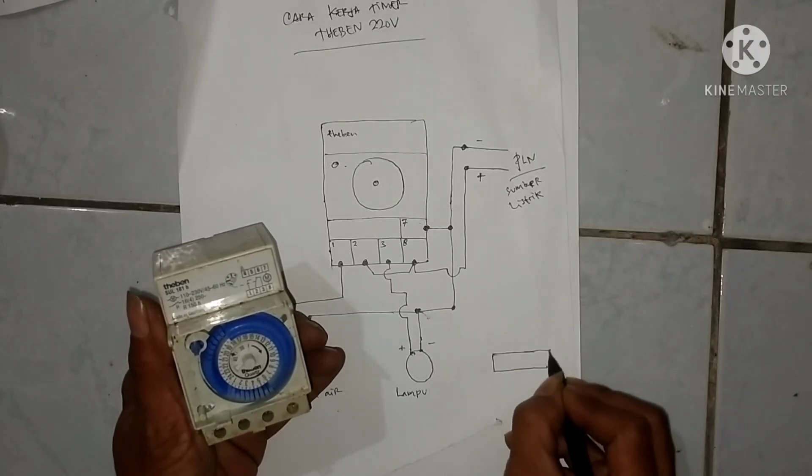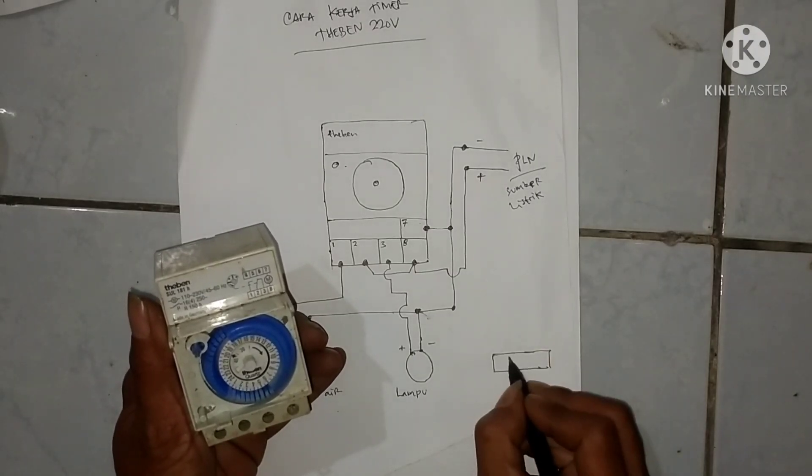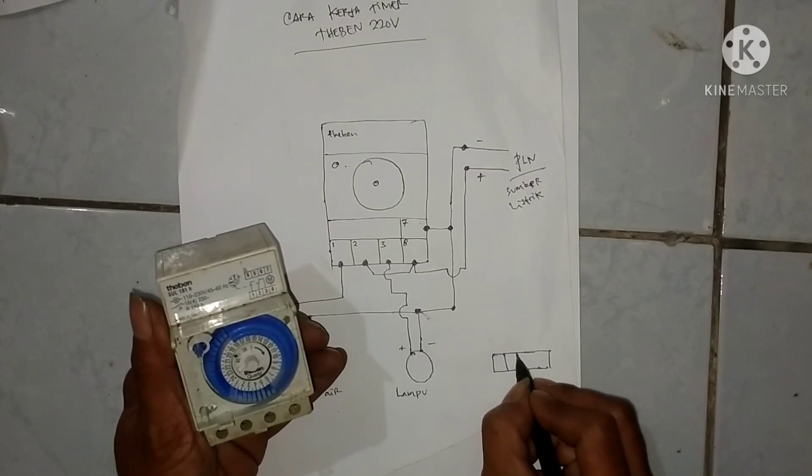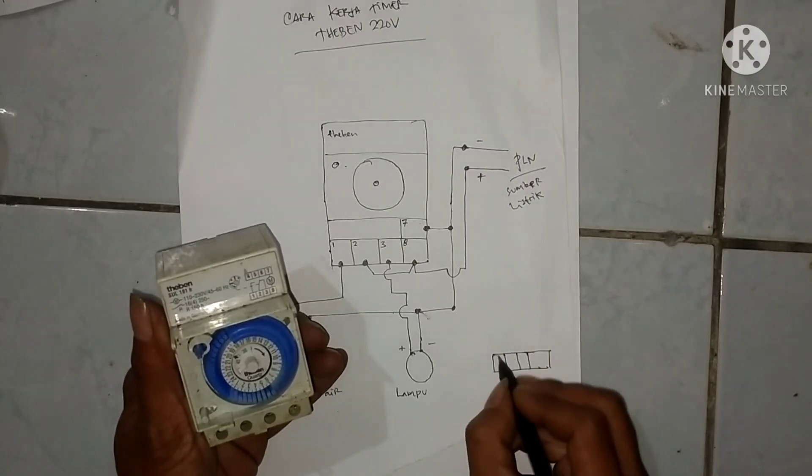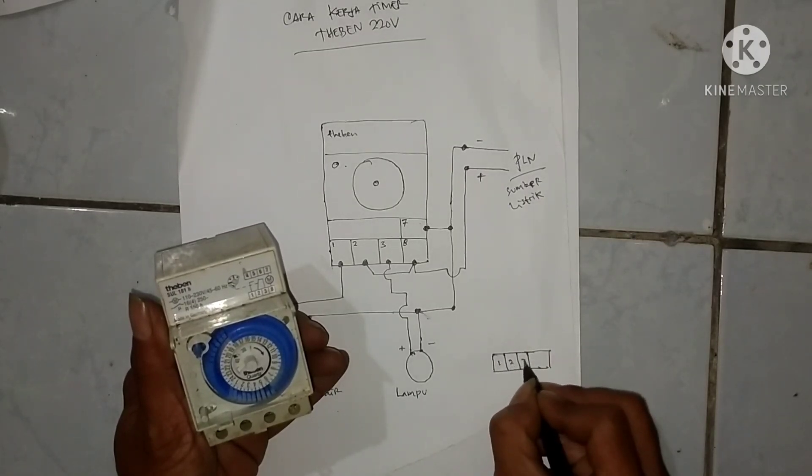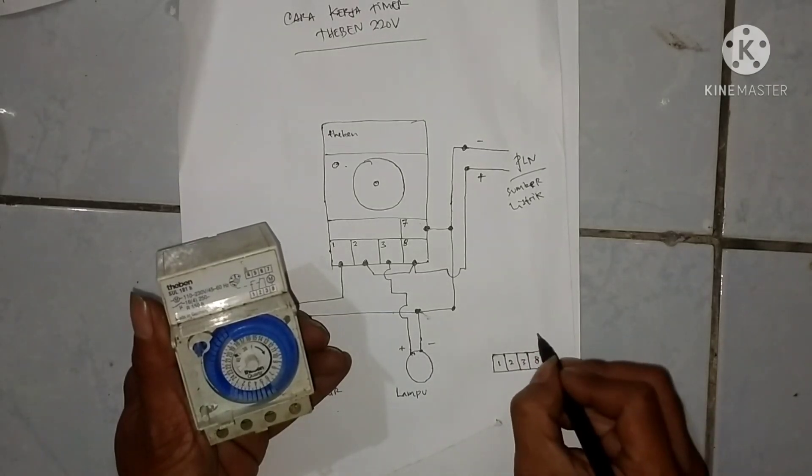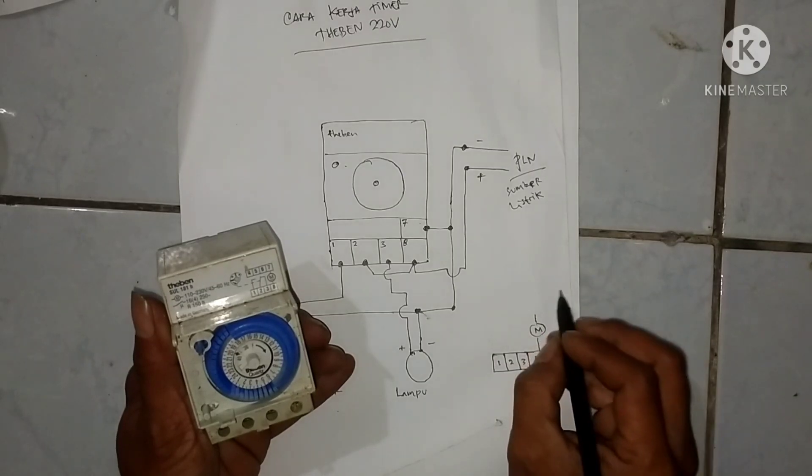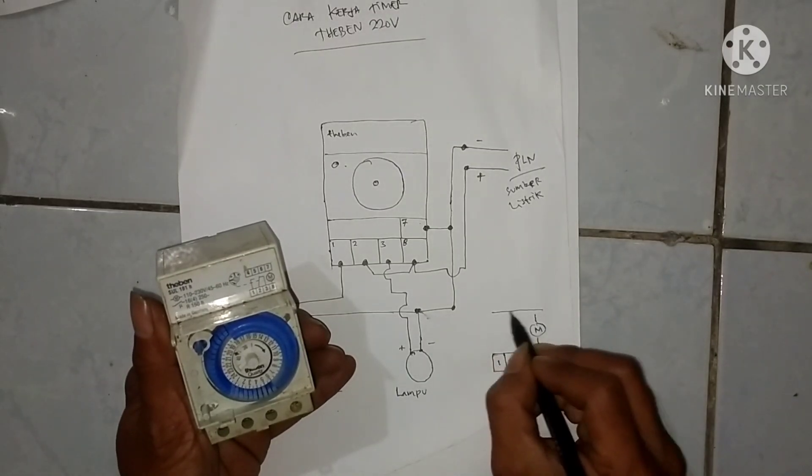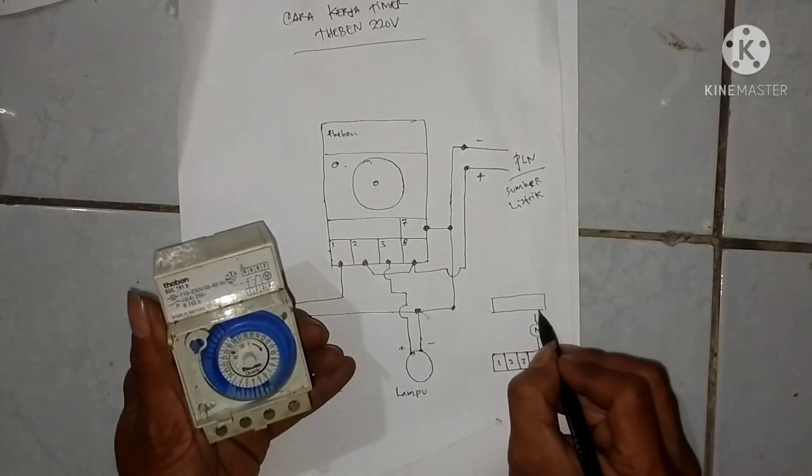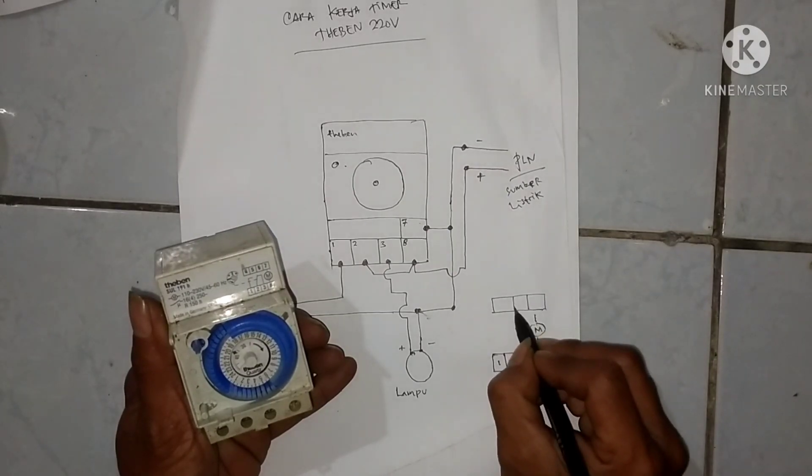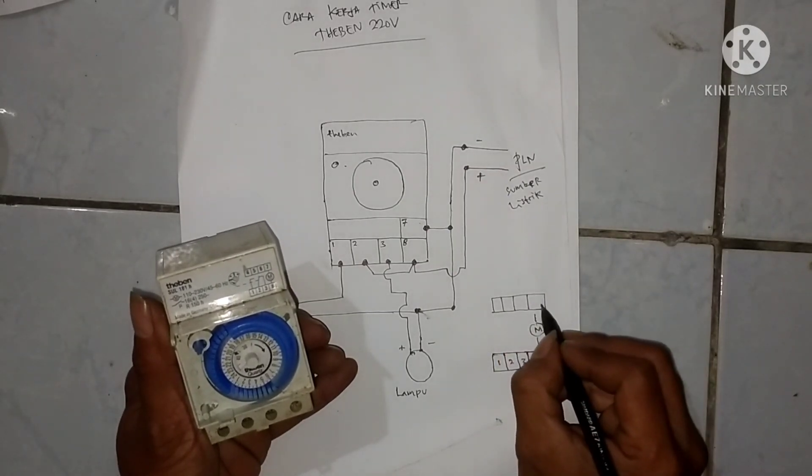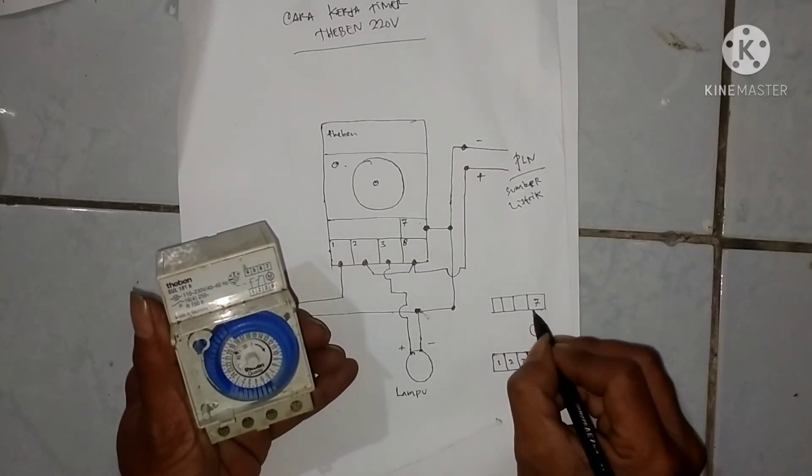Saya gambar ulang wiring yang ada di timer ya biar sama. Nah itu yang saya gambar bulat itu motor, motor penggeraknya si timer tersebut. Itu buat angka 7 netral.